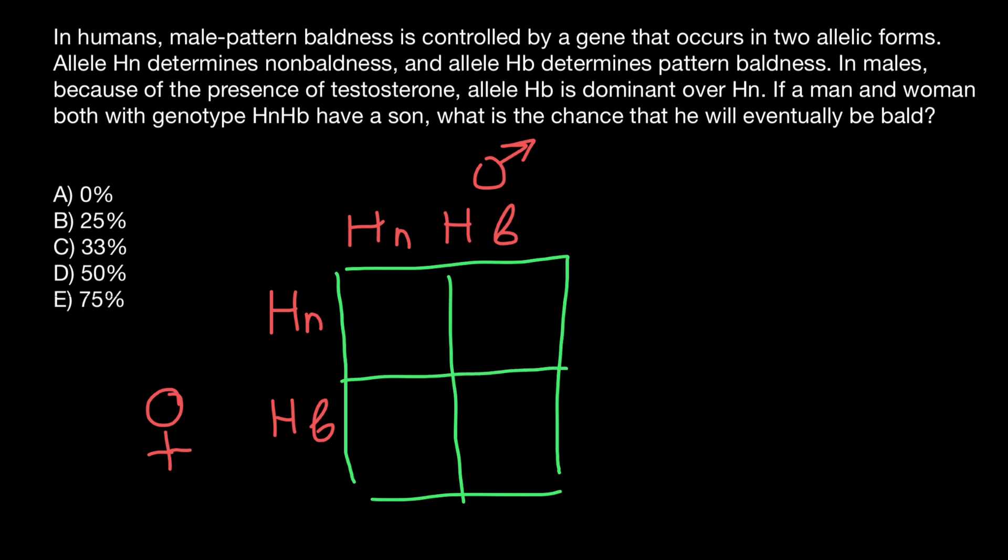Which is going to be two by two. And here we are going to have HN-HN. Here we are going to have HN-HB, and here HN-HB, and here HB-HB.